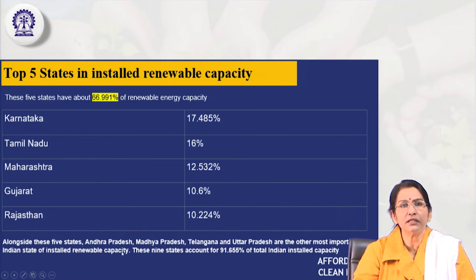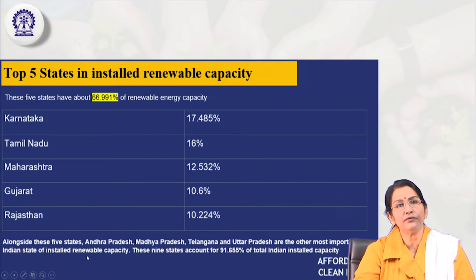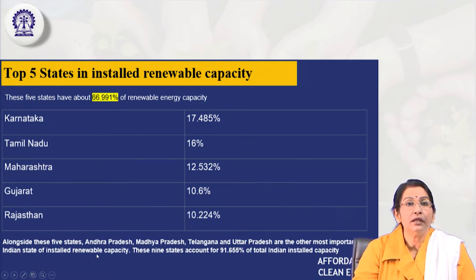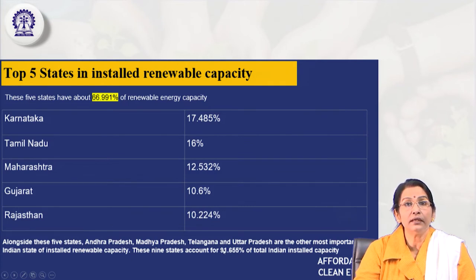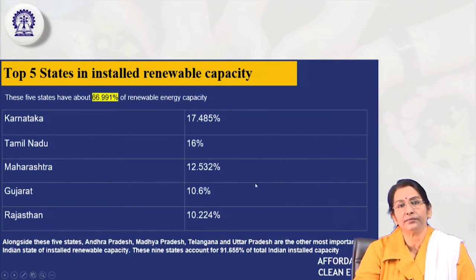Alongside these, 5 other states such as Andhra Pradesh, Madhya Pradesh, and Telangana are also working on and planning their renewable energy infrastructure. Altogether, 9 states account for 91.65 percent of the total Indian installed capacity of affordable and clean energy.